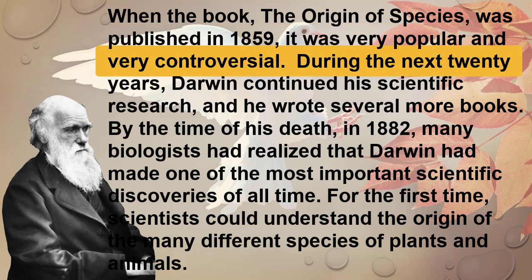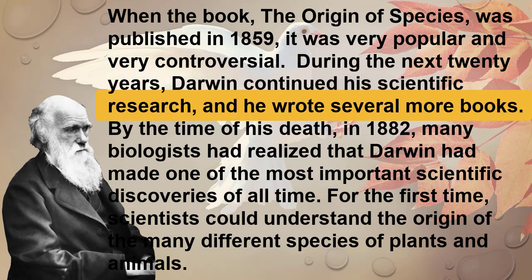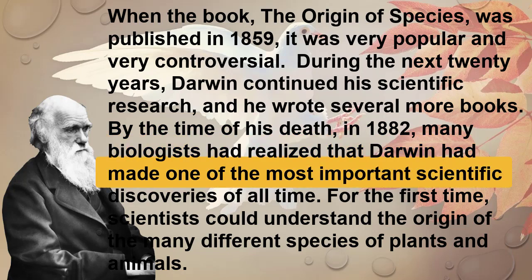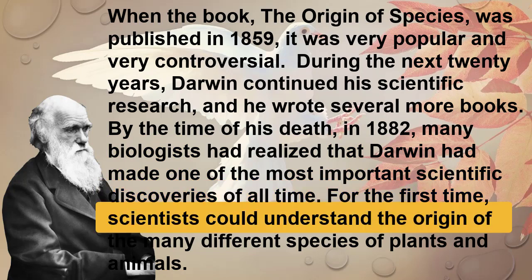During the next 20 years, Darwin continued his scientific research and wrote several more books. By the time of his death in 1882, many biologists had realized that Darwin had made one of the most important scientific discoveries of all time. For the first time, scientists could understand the origin of the many different species of plants and animals.